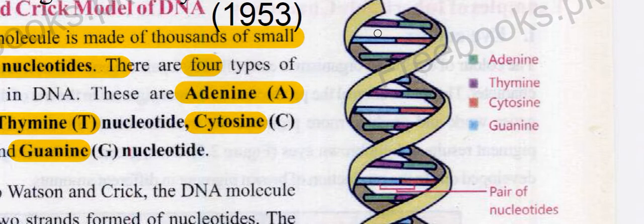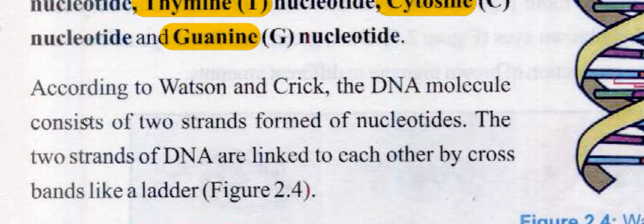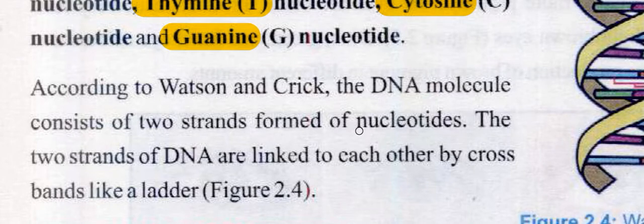We know that in one DNA molecule there are four types of nucleotides, and these form two strands. The two strands of DNA are linked to each other by cross bands.